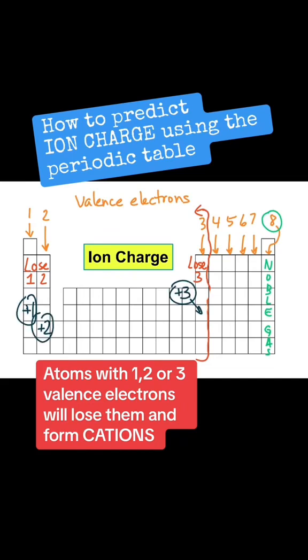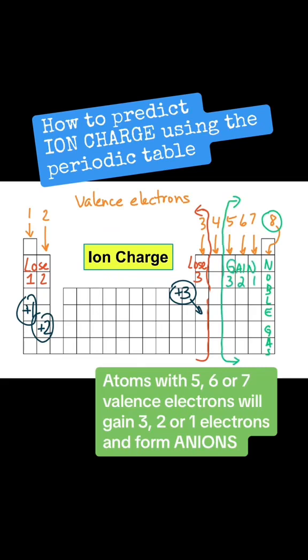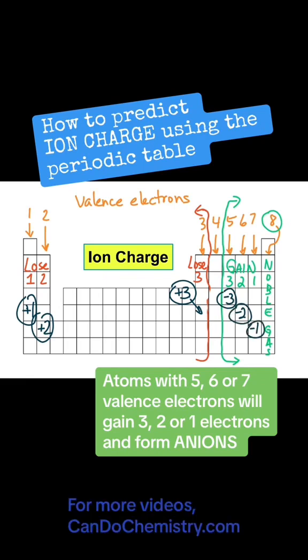Elements with five, six, or seven valence electrons are going to gain three, two, or one in order to get to that eight. When you gain three electrons you're going to have a negative three charge. These guys that gain two will have a negative two charge, and these guys will have a negative one charge.